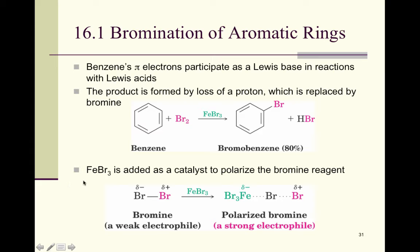For this class you need to know not only the reaction but also how the catalyst is prepared. Iron bromide is added as a catalyst to polarize the bromine reagent. Br2 by itself is a very weak electrophile; bringing in the iron bromide polarizes it, making it a much stronger electrophile. An electrophile likes electrons. Bromine normally has a negative charge, being highly electronegative, but we want it to have a positive charge. The benzene ring has high electron density above and below the plane, so it will be attracted to electrophiles.